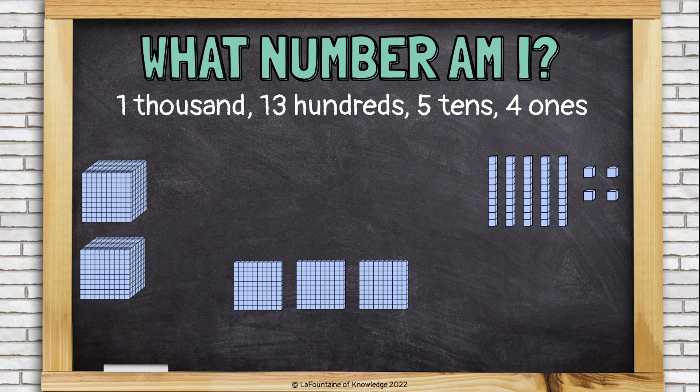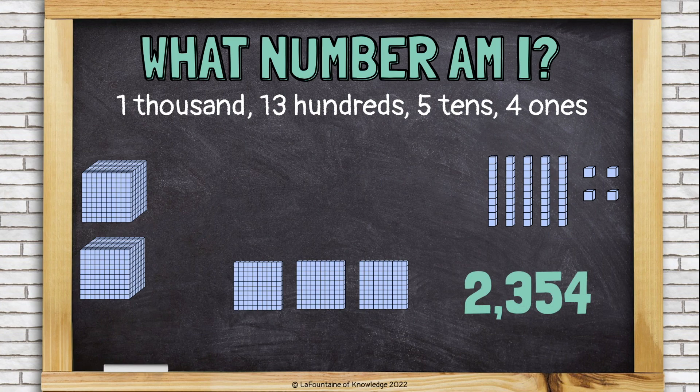Now I have 2 thousands, 3 hundreds, 5 tens, and 4 ones, which is the number 2,354.